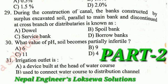During the construction of a canal, the banks constructed by surplus excavated soil parallel to the main bank and discontinued at cross branches or distributors is known as: A - dowel, B - spoil bank, C - service bank, D - borrow banks.